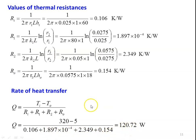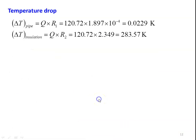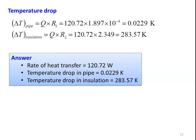The rate of heat transfer Q = (Ti - To)/(Ri + R1 + R2 + Ro) = (320 - 5)/(0.106 + 1.897×10⁻⁴ + 2.349 + 0.154) = 120.72 W. Temperature drop across the pipe: Q·R1 = 120.72 × 1.897×10⁻⁴ = 0.0229 K. Temperature drop across the insulation: Q·R2 = 120.72 × 2.349 = 283.57 K.